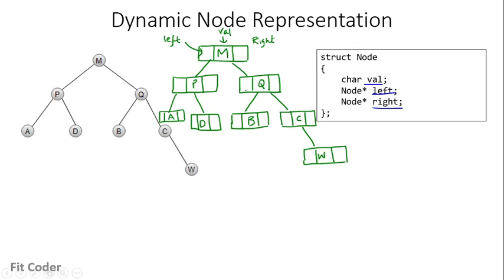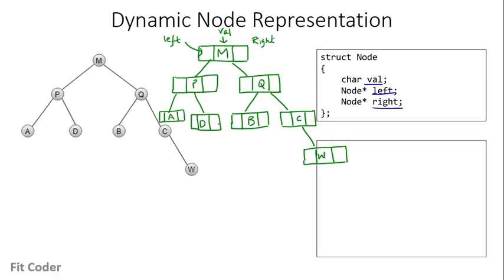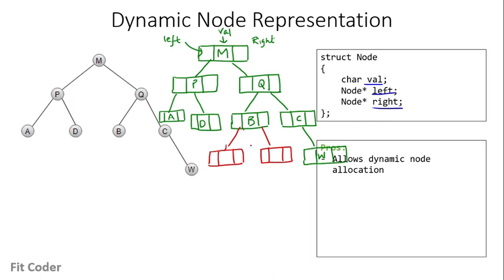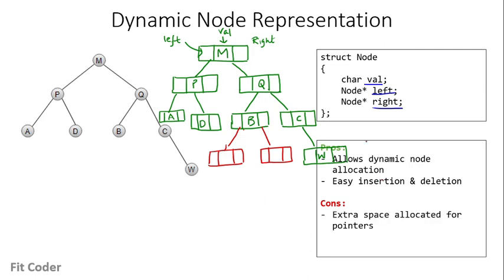In dynamic node representation, every node has three parts: a left pointer, a right pointer, and the value. The left pointer points to the left child and the right pointer points to the right child. One advantage is it allows dynamic node allocation — adding or deleting a node is easy. The disadvantage is that we need to store two extra pointers per node, using extra space. Also, accessing a parent node is not straightforward since there is no parent pointer.